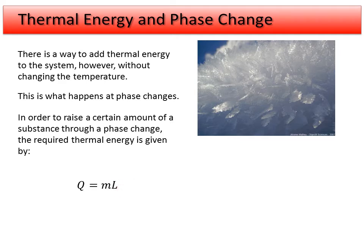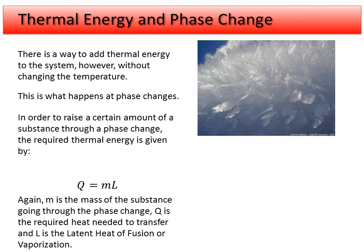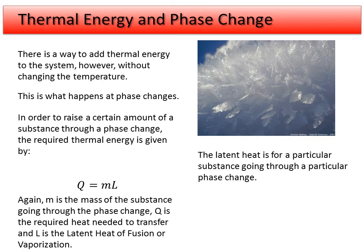In some cases, like carbon dioxide at normal pressure, a substance can go directly from a solid to a gas — and back — which has its own different L value. So there are really three phases, and each transition between phases has an associated L value. That value is the same going in either direction. This latent heat is specific to both the phase change and the substance.